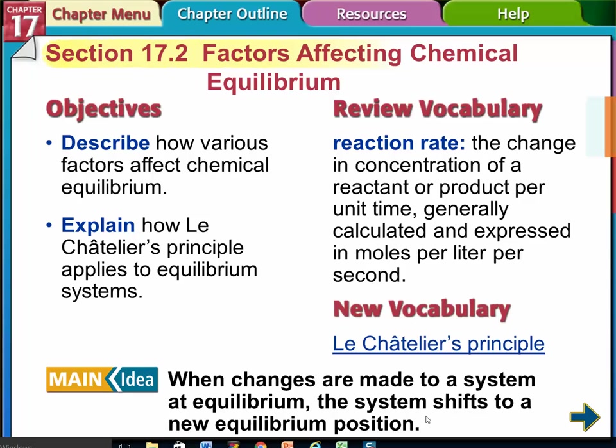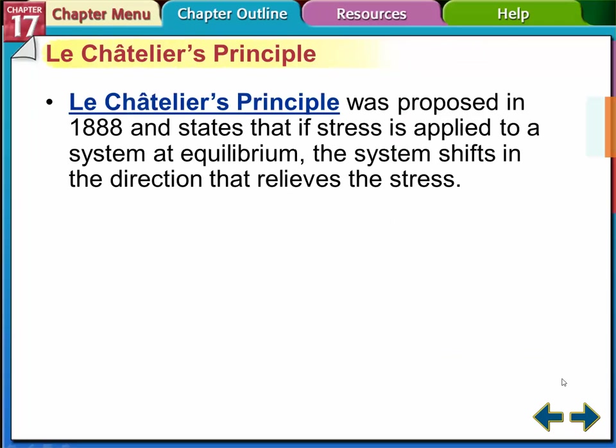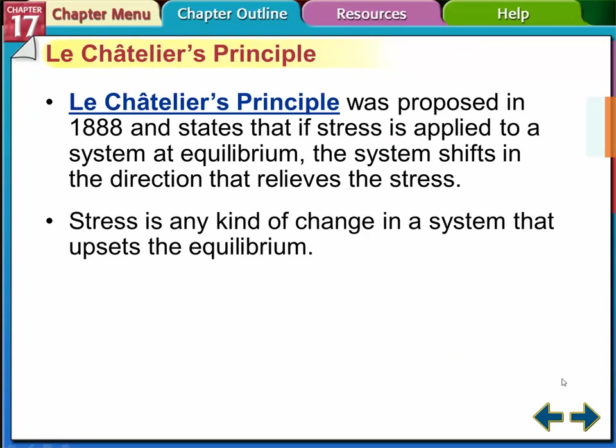This is section 17.2. I'm going to talk about factors affecting equilibrium — mostly Le Chatelier's principle and how it works. When we make changes to an equilibrium system, the equilibrium shifts to get back to a new equilibrium position. Le Chatelier's principle was proposed in the late 1800s, and it says that if a stress is applied to a system at equilibrium, the system shifts in the direction that relieves the stress. Stress is any kind of change in a system that upsets the equilibrium.